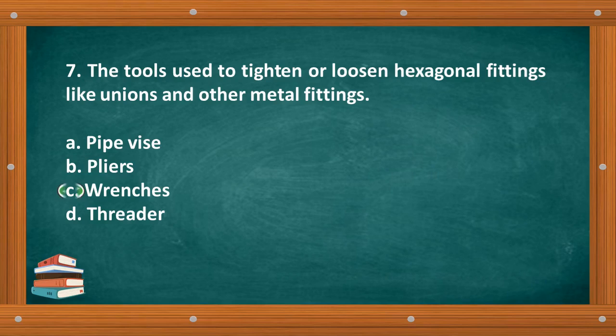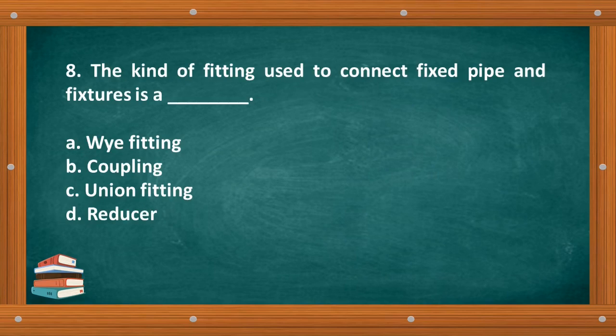The correct answer is letter C, Wrenches. Question number 8: The kind of fitting used to connect fixed pipe and fixtures is a blank. A. Wye fitting, B. Coupling, C. Union fitting, D. Reducer.